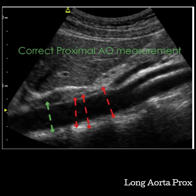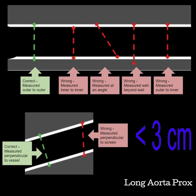Measure the proximal aorta as close to the heart as you can where you have clear walls. The walls can become distorted due to lung and heart motion, as well as proximity to the left diaphragmatic crux. Avoid being too close to the celiac axis or measuring into the spine. The aorta's anterior-posterior dimension is measured outer to outer wall and should be perpendicular to the vessel. The aorta should measure less than 3 cm in any direction. Larger than 3 cm indicates an aortic aneurysm or enlargement of the aorta.